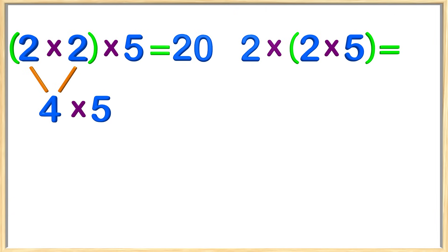Now we can do the problem on the right side of the board, and if the associative property of multiplication is right, we should get the same answer. To start, we remember the King goes first, so we multiply the numbers in the parentheses: two times five. The answer to that is ten. Now all that is left is ten multiplied by two. What is ten times two? Twenty! Great job, kids! We can see that both problems give us the same answer no matter how we group the numbers. This is amazing stuff!